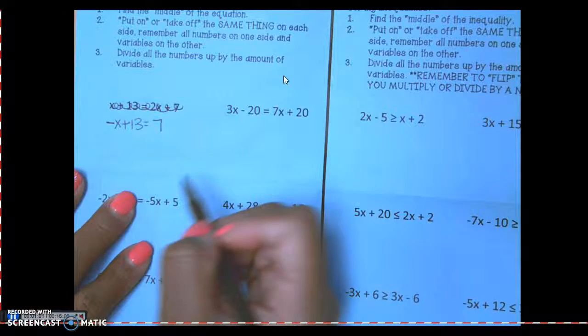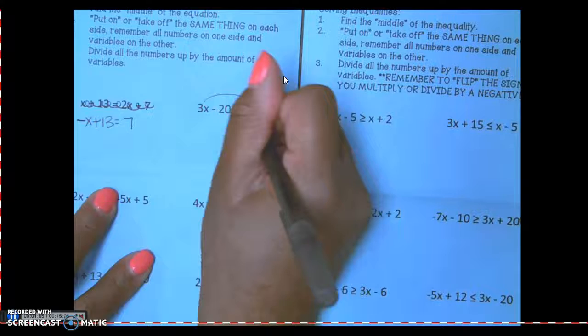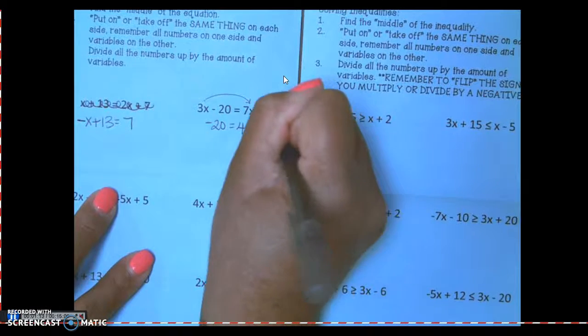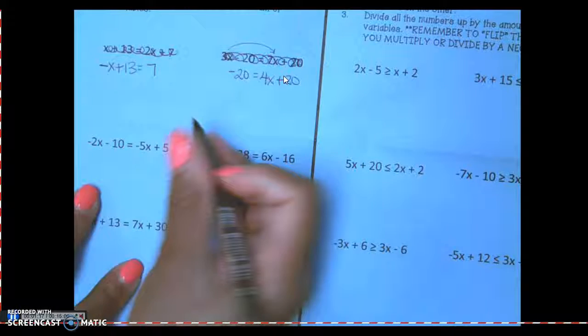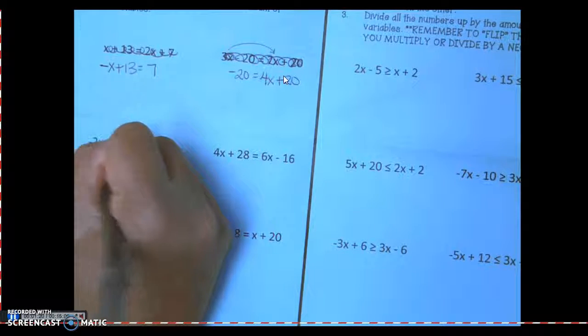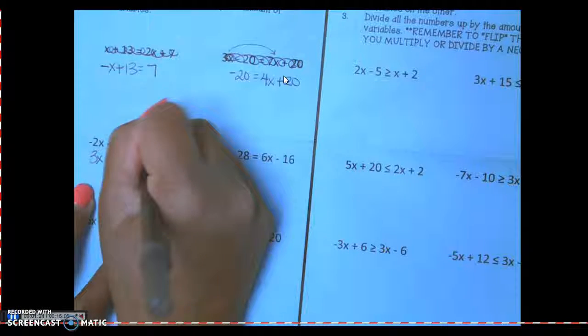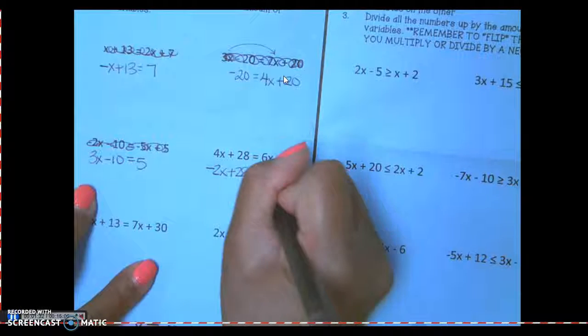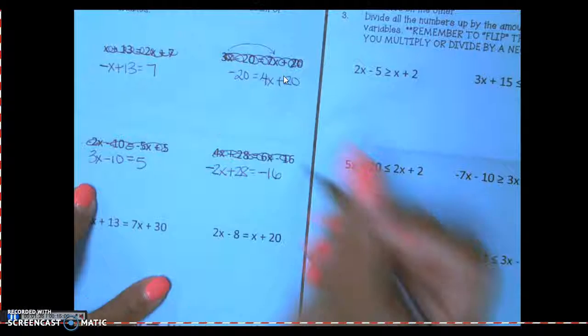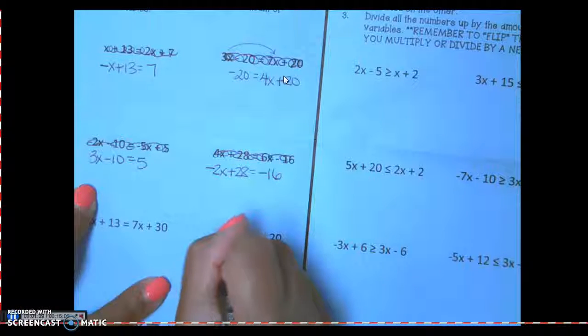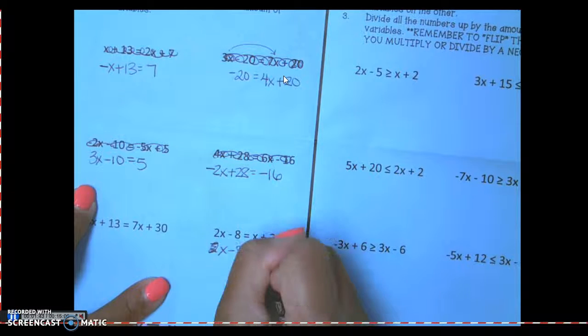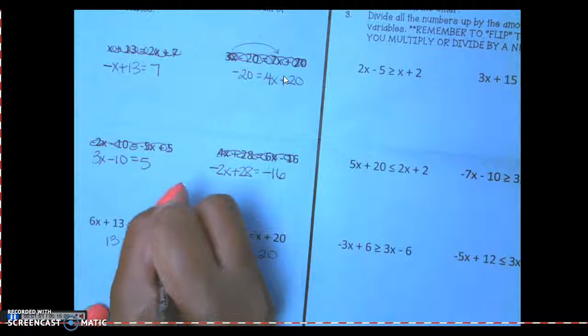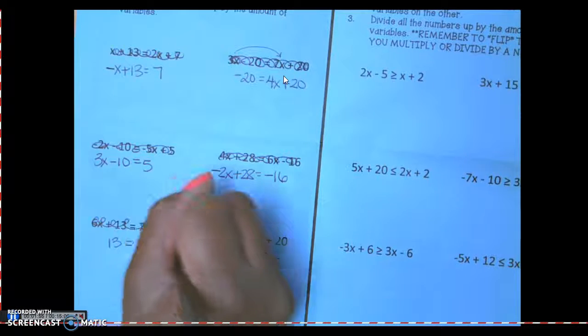Then I'm left with 7, this goes away. All you need to do is write this equation here. I'm going to bring the 3x over here. I have negative 20 equals 4x plus 20, scratch this out. Down here, 3x minus 10 equals 5. 2x plus 28 equals negative 16. 13x minus 8 equals 20.